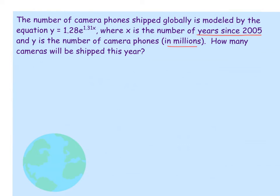where x is the number of years since 2005, and y is the number of camera phones in millions. How many camera phones would be shipped this year? Well, this year is the year 2022. We're not going to plug in 2022 for x because x stands for the years since 2005. So we'll actually plug in x equals 17 if we do 2022 minus 2005.